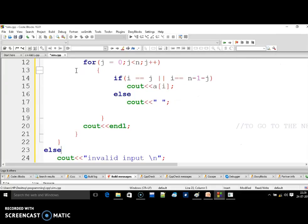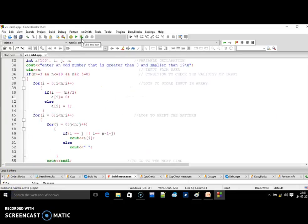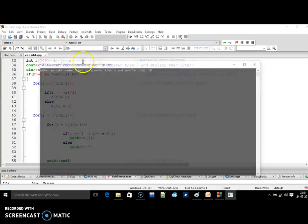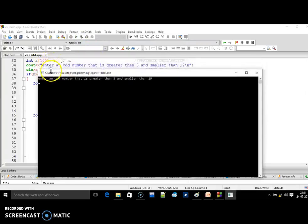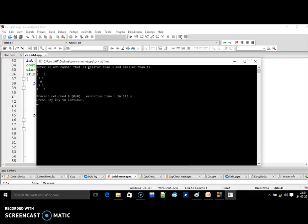After that, I am going to say else it is an invalid statement. Now let us see how this works. When I run this program, I will click build and run. Here we used a cout statement. So the first thing that is getting displayed is enter an odd number that is greater than 3 and smaller than 90. I enter 5 which is an odd number and is smaller than 90. So that is satisfied and here you have a pattern in the form of X.